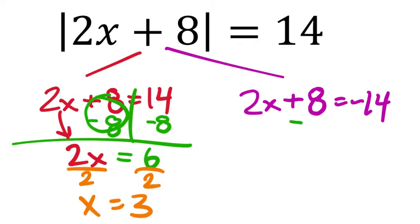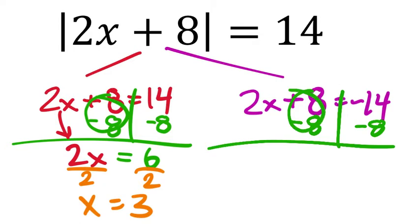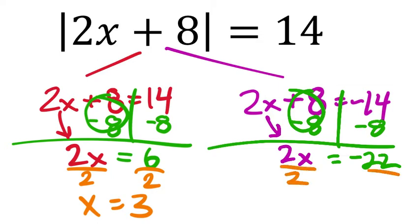How about the other one? The process is the same — subtract 8 from both sides — but it gives a different answer. That zeros out the 8, and I drop my 2x, which now equals negative 14 minus 8, which is negative 22. Divide both sides by 2, so x equals negative 11.